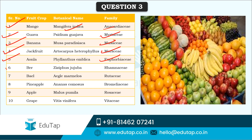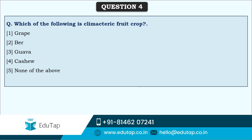Amla — Phyllanthus emblica, family Euphorbiaceae; Ber — Ziziphus jujuba, family Rhamnaceae; Bael — Aegle marmelos, family Rutaceae; Pineapple — Ananas comosus, family Bromeliaceae — named because of bromelain, a phytochemical present in high quantities in pineapple; Apple — Malus pumila, family Rosaceae; Grape — Vitis vinifera, family Vitaceae. Plants are grouped into families based on similar physiological or phytochemical characteristics.